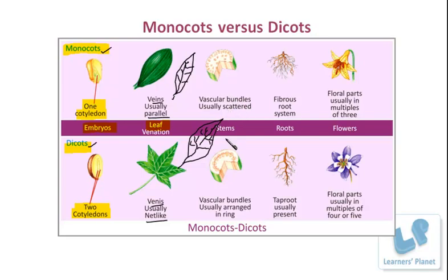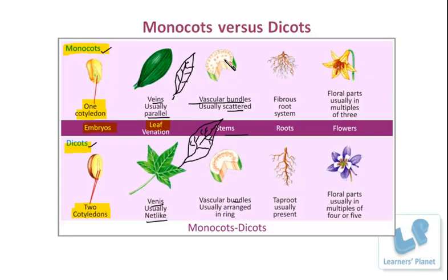Besides that, if we compare the stem structure, we have to take a transverse section (TS) and observe it under the microscope, concentrating on the vascular bundles. The vascular bundle is scattered in the case of monocots, whereas it is arranged in the form of rings in the case of dicot. So if the TS shows a ring pattern — properly arranged in a circular pattern — then it is a dicot plant. And if it is in a random, scattered pattern, then it is a monocot plant.